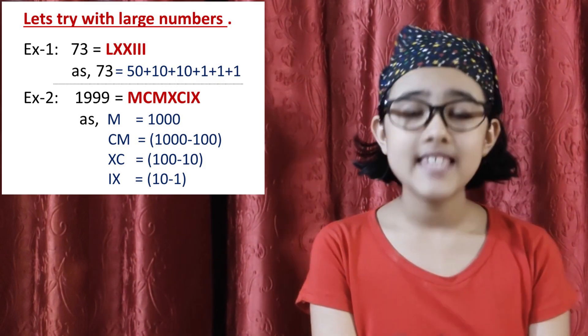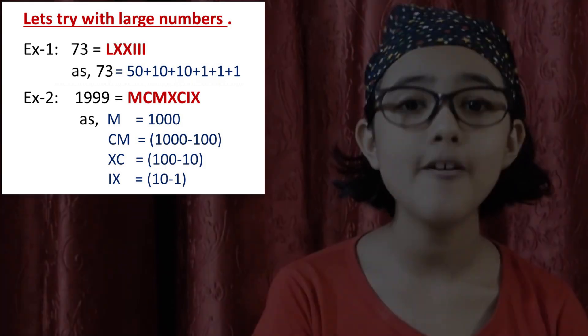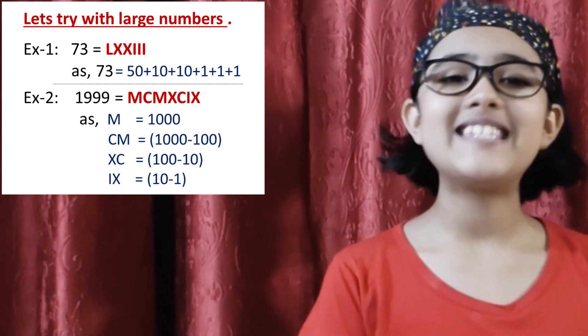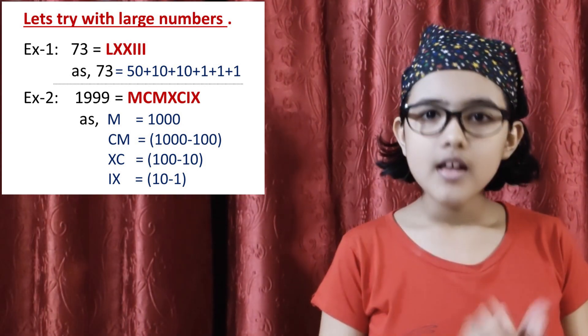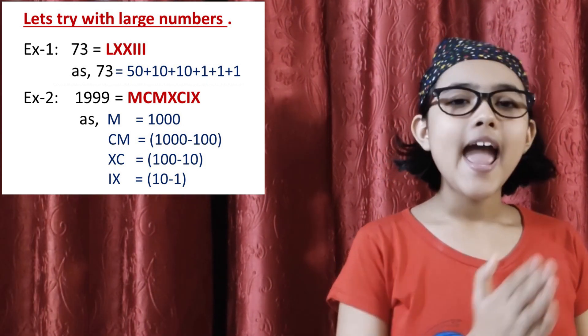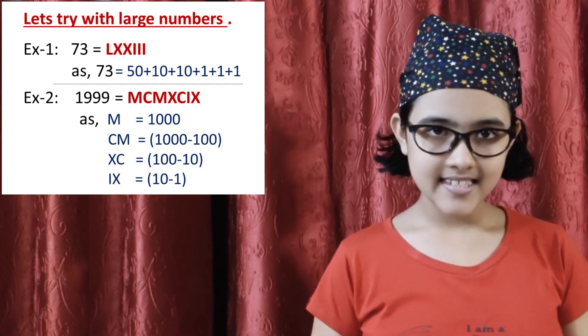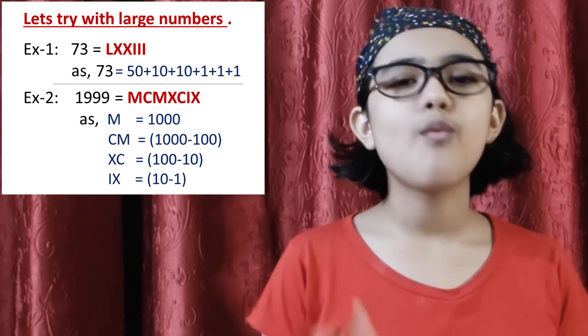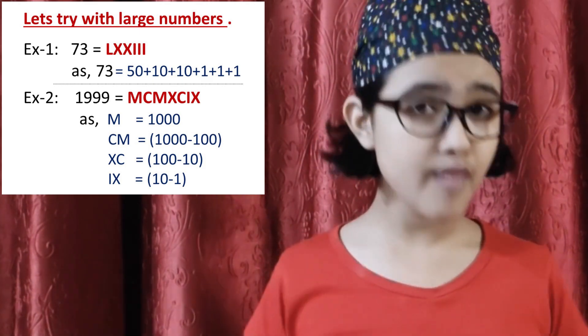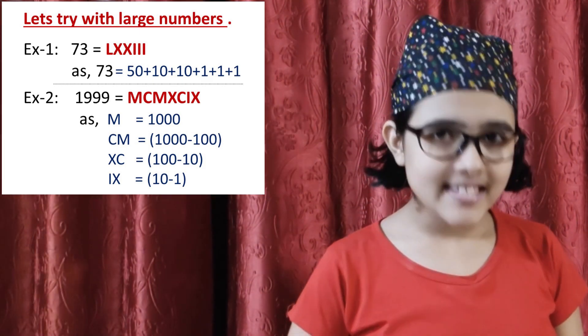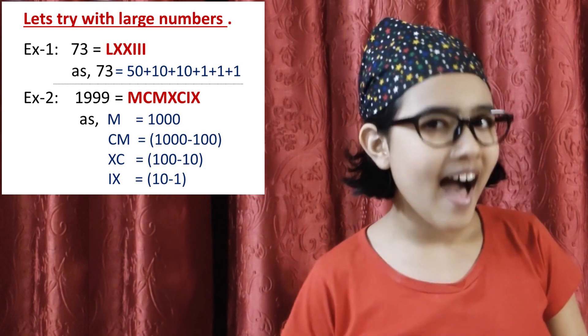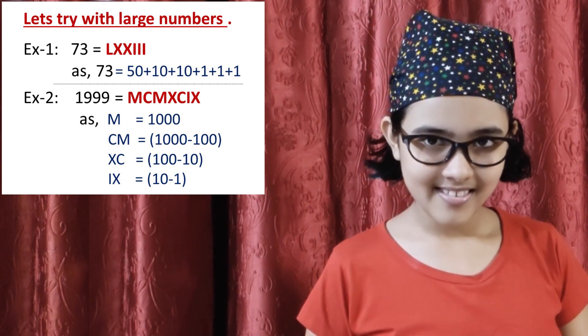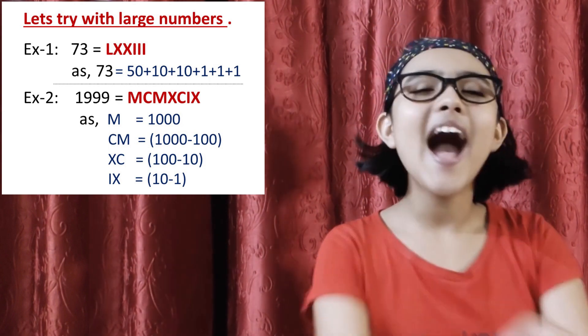50 is L. So 70 is LXX. We know that 10 plus 10 plus 10 is 30, and adding 1 plus 1 plus 1 is 3. So 73 is LXXIII. Is this clear? I hope it is.